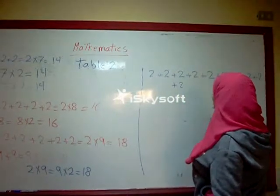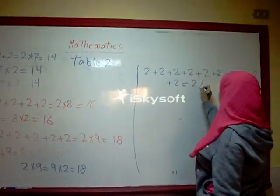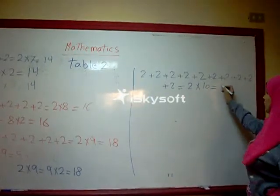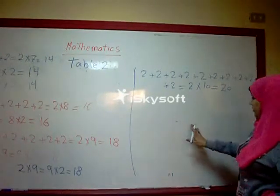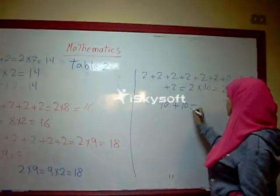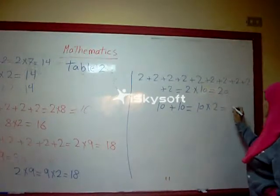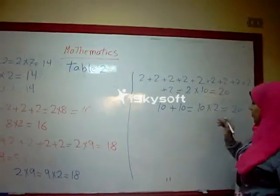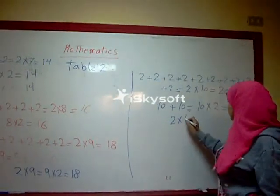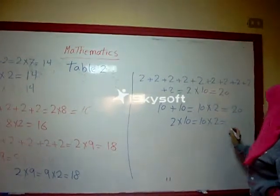Two plus two plus ... plus two equals two times ten equals twenty. Ten plus ten equals ten times two equals twenty. Then we get two times ten equals ten times two equals twenty.